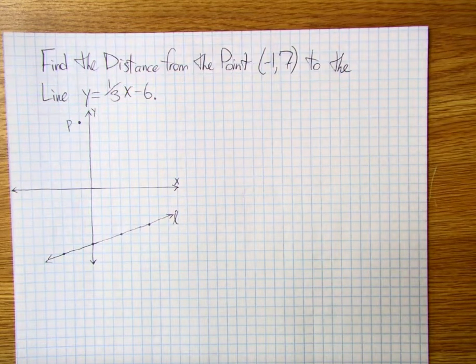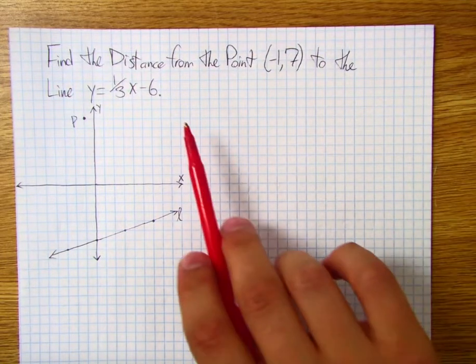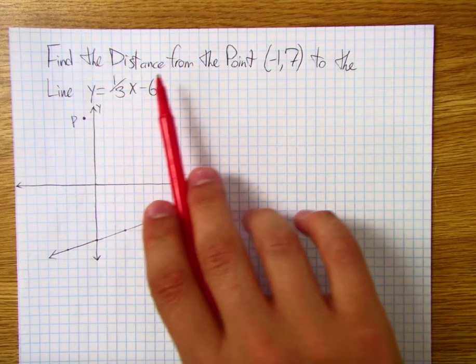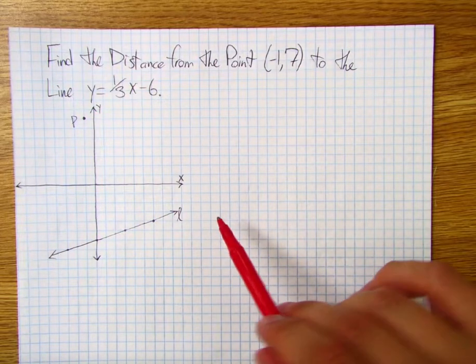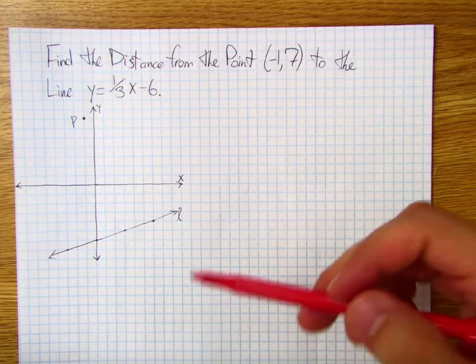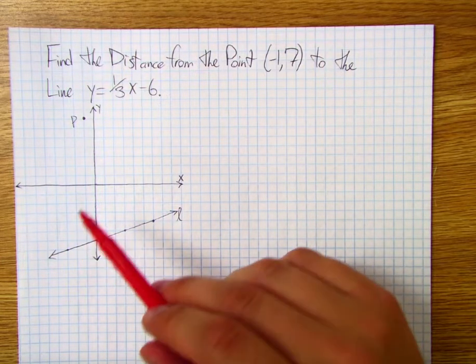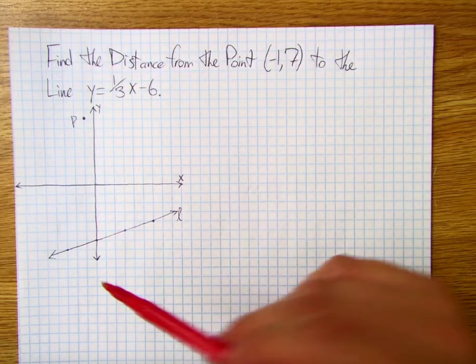Alright, so this video is really just intended to help you guys on your performance task on this e-learning day assignment. So what we're going to do is we're going to just go ahead and find the distance from a point to a line that we're given the equation of. Now just to be clear, you don't have to have a graph to actually be able to conceptualize what's going on here, but I find that a lot of students really benefit from having this to sort of look at and work off of.